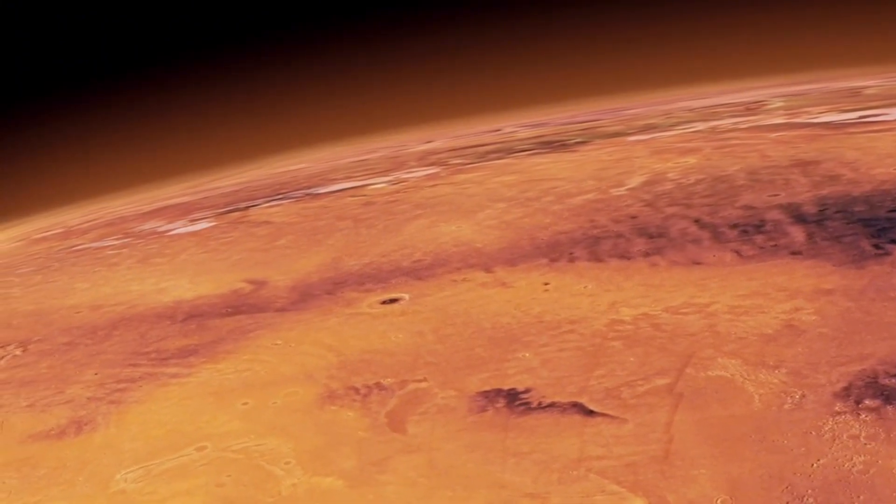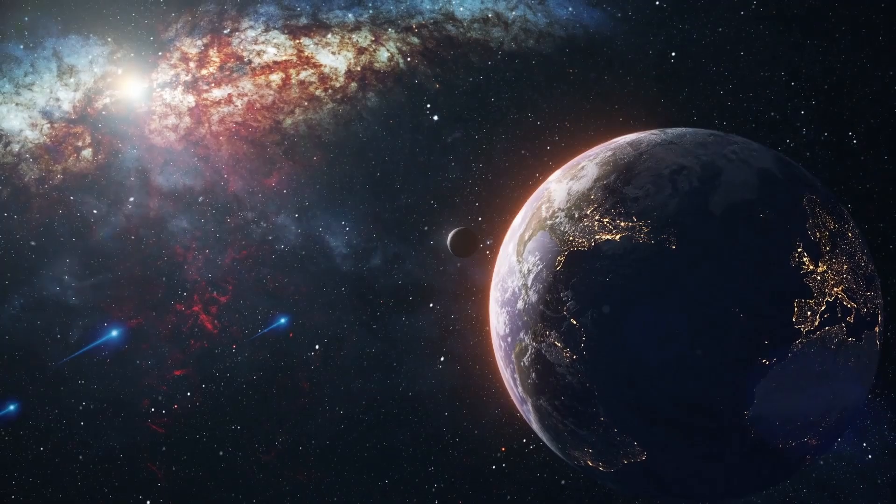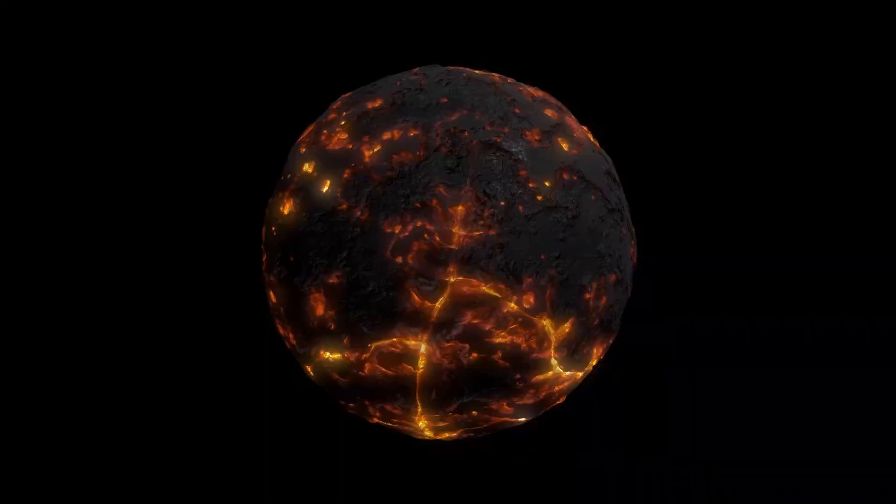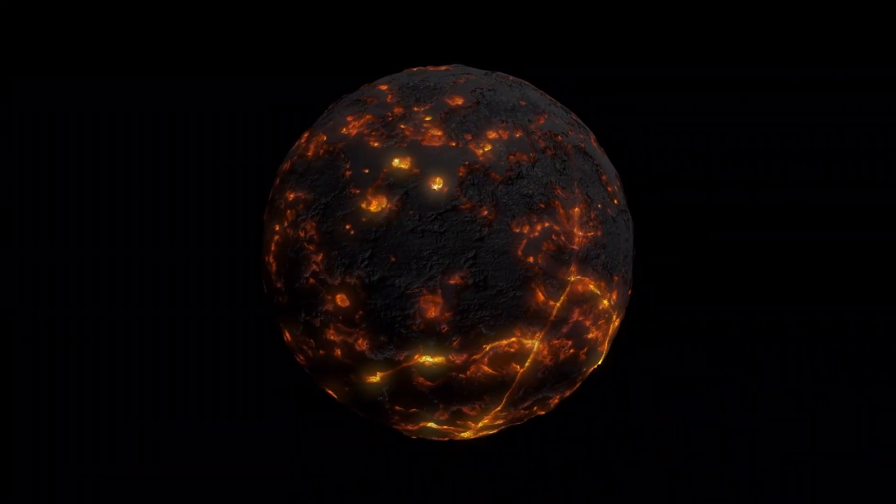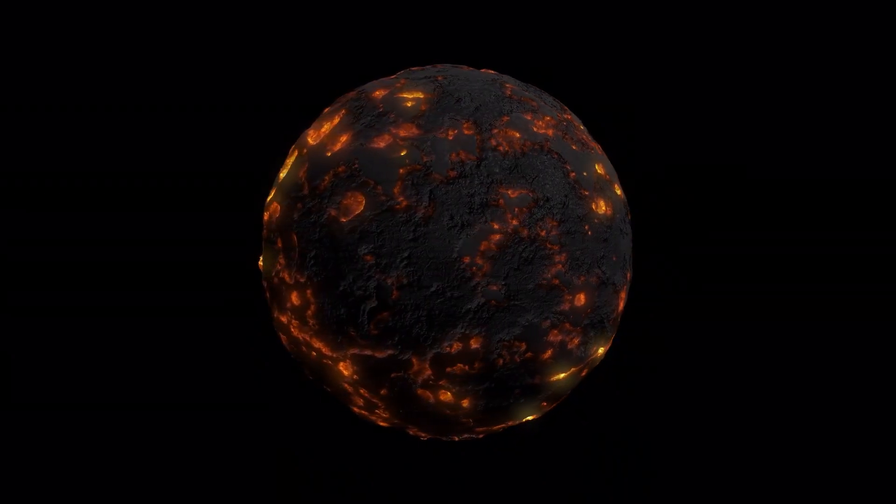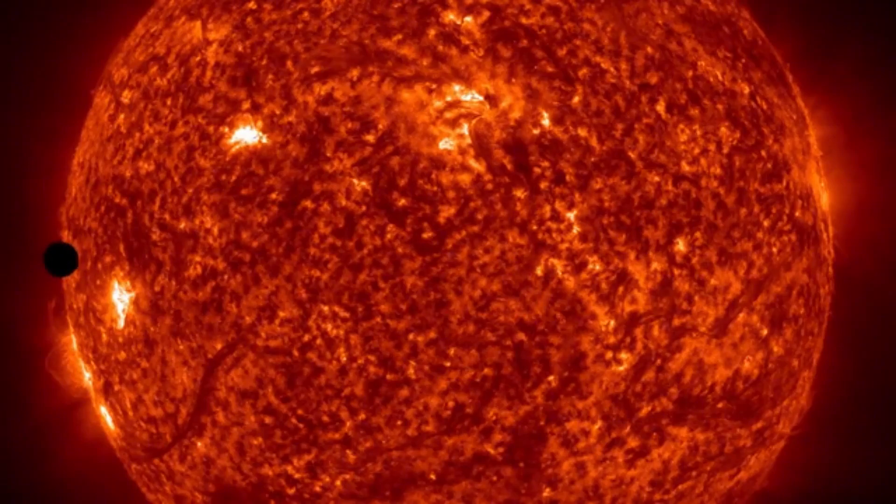In contrast, Neptune, a giant gas planet, is made mostly of hydrogen, helium, and other lighter components with a deep, dense atmosphere. A collision between such disparate bodies would significantly affect their structure and behavior, potentially creating an event that would be visible across vast distances.